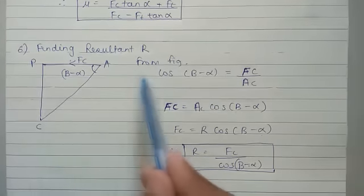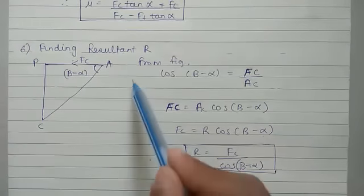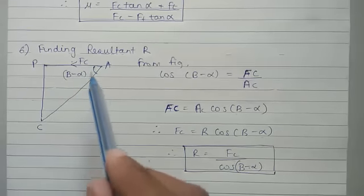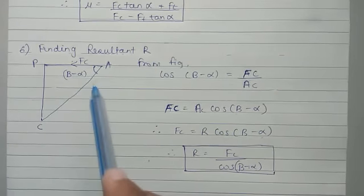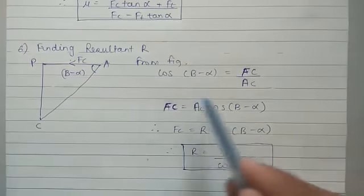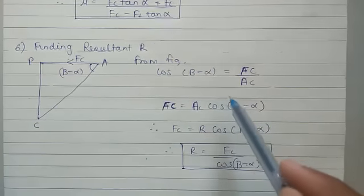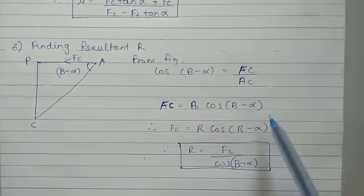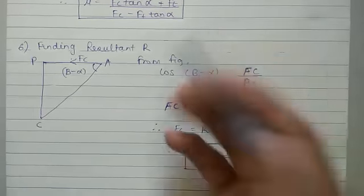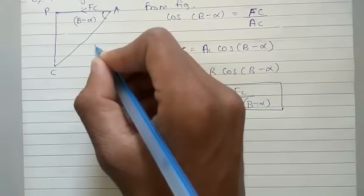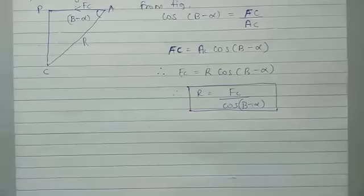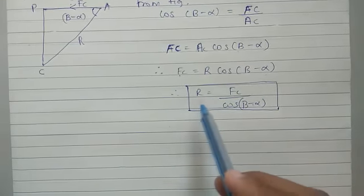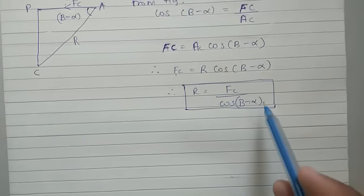Next, finding the resultant R. This is the required triangle drawn from the Merchant Circle Diagram with points P, A, and C, showing Fc, Ft, and the angle beta minus alpha. From the figure, cos(beta minus alpha) is equal to Fc upon AC, so Fc is equal to AC cos(beta minus alpha), where AC is the resultant R. Therefore R is equal to Fc upon cos(beta minus alpha).